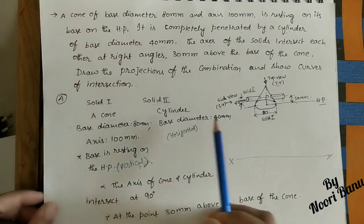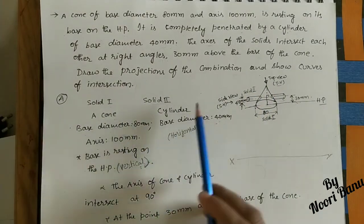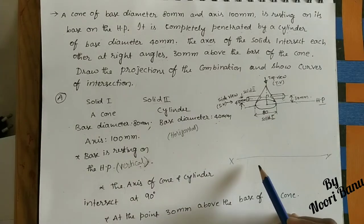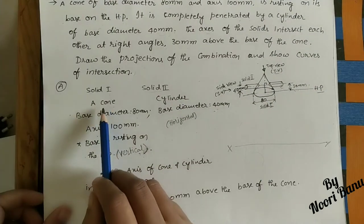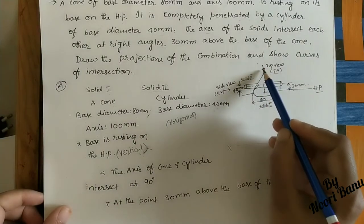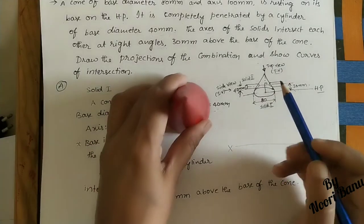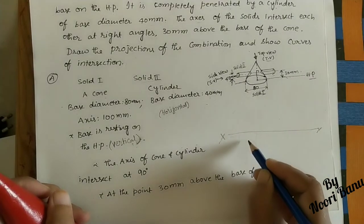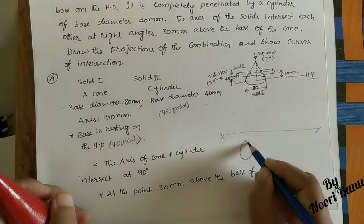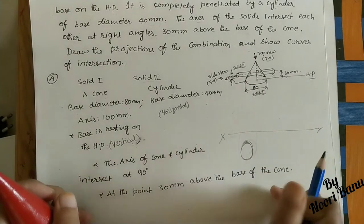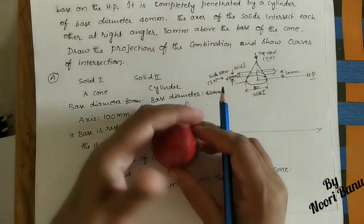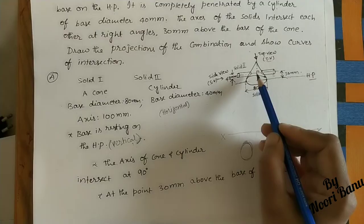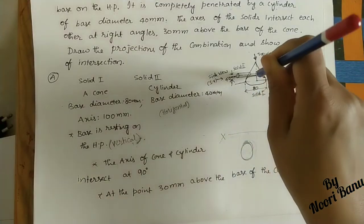We have to draw projections — front view, top view, and side view — and show the curves of intersection. Initially, we'll do the rough diagram. For solid one (cone), the top view is a circle resting on the horizontal plane. We draw the XY reference line, then the circle below it for the top view.